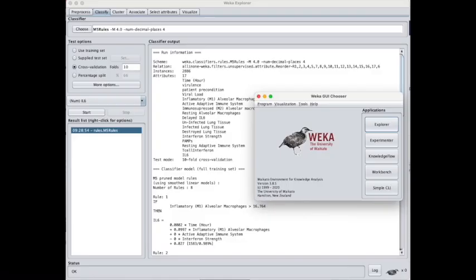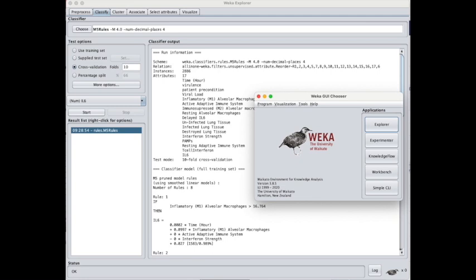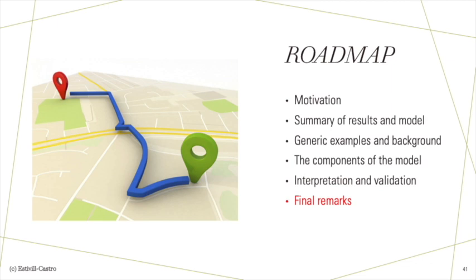We also used the model and its generated data for the six scenarios to construct a rule-based classifier. This is an application of machine learning, where we use the tool Weka to learn using its PART algorithm and obtain rules that estimate IL-6. The generation of these rules identifies the attributes that are high predictors. We conclude that the attributes related to macrophage activation, such as M1 and the active adaptive immune system, are key stocks for predicting IL-6.